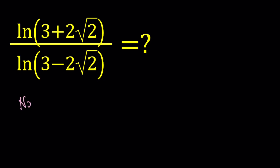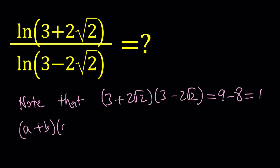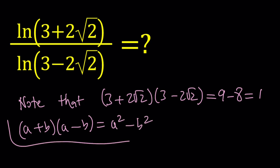First of all, let's note that 3 plus 2 root 2 multiplied by 3 minus 2 root 2 equals 9 minus 8, which is equal to 1, from the difference of two squares. Quick reminder: the difference of two squares is when you multiply a plus b and a minus b, you get a squared minus b squared.